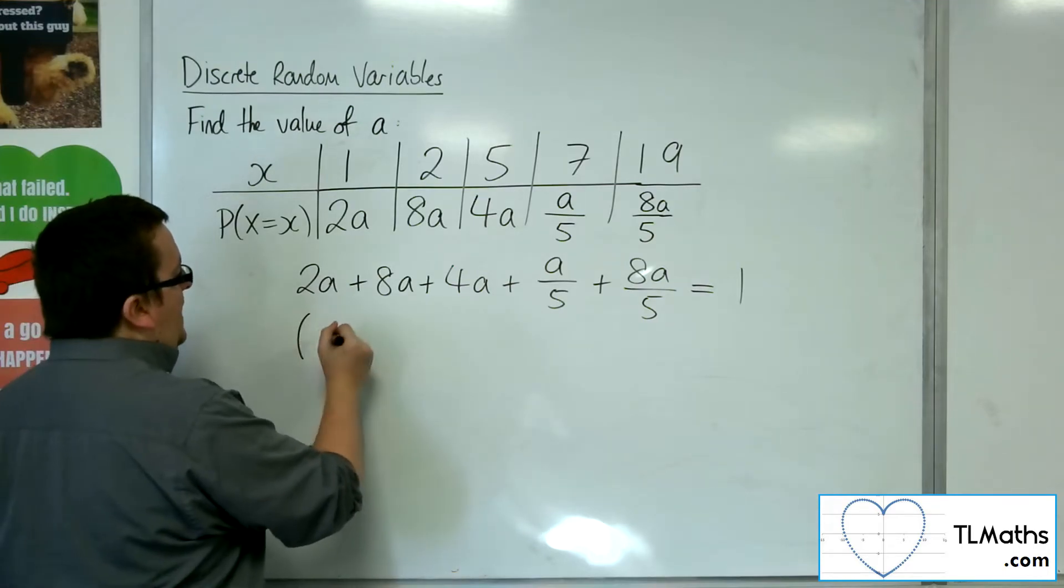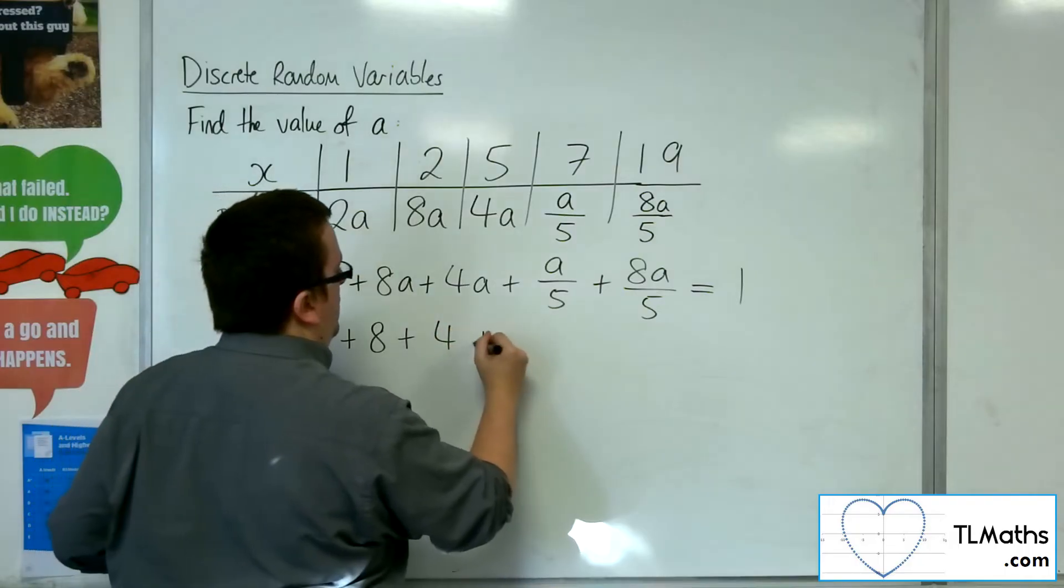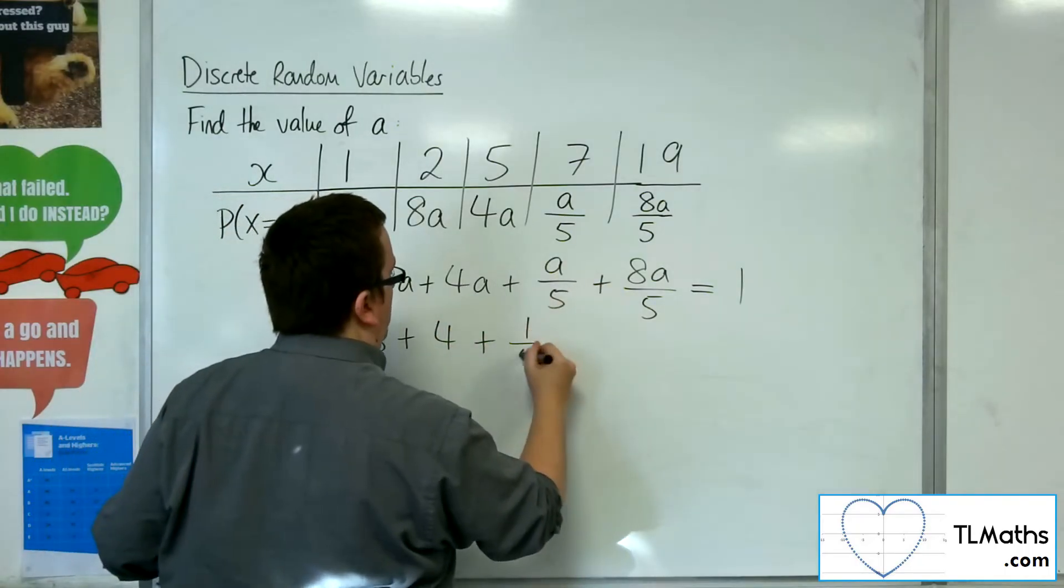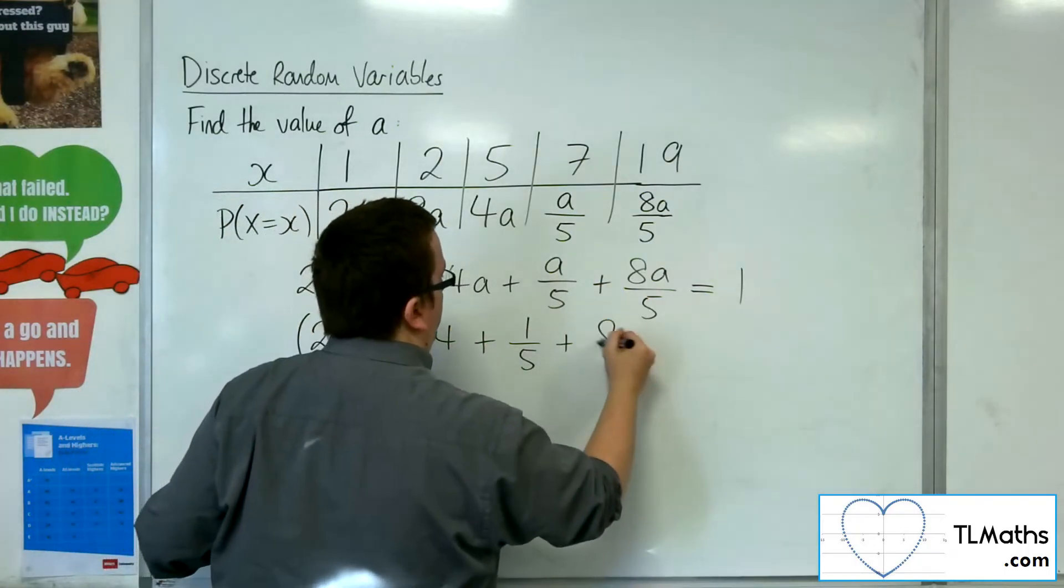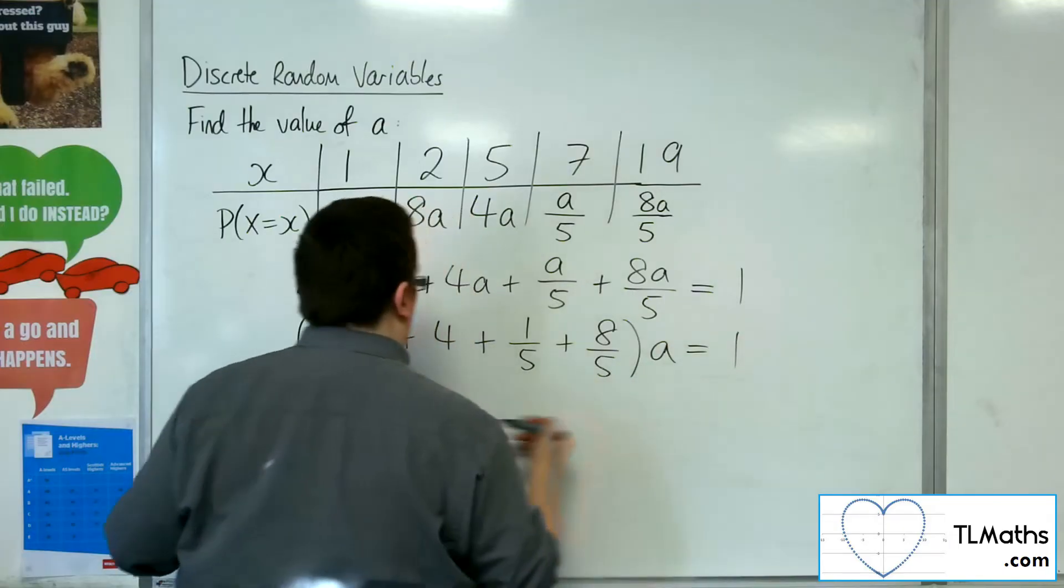So if I factor the a out, I'm going to have 2 plus 8 plus 4 plus 1 fifth plus 8 fifths times a is equal to 1.